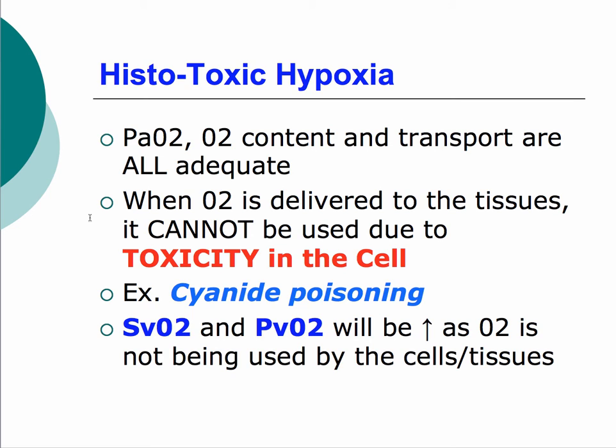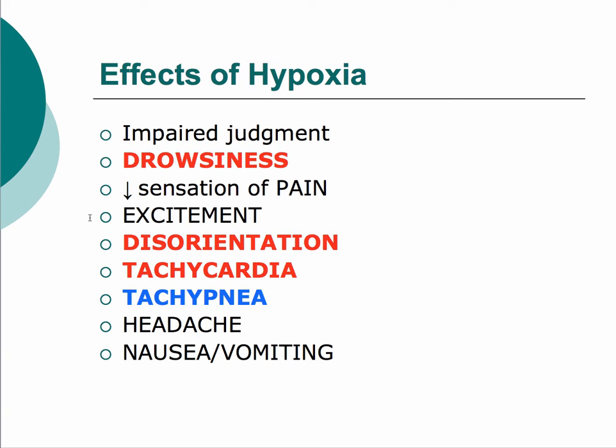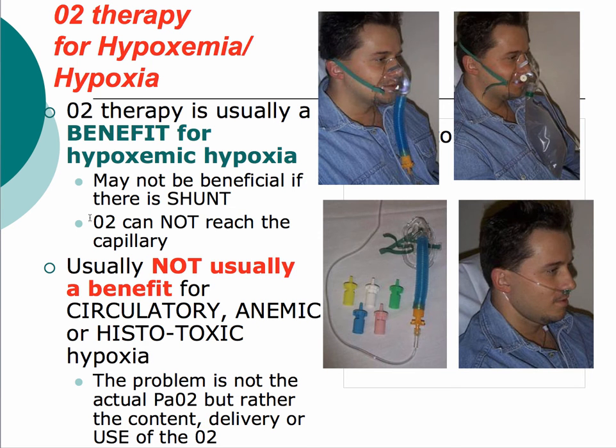Histotoxic hypoxia is the classic example of cyanide poisoning. Everything else is normal — pulmonary perfusion, ventilation, cardiac output — but the cells themselves are not able to utilize the oxygen being delivered. With cyanide poisoning, there's a mechanism in the electron transport chain that stops cells actually using oxygen, so tissues are almost resistant to it. All four types of hypoxia ultimately lead to tissue oxygen starvation, with symptoms including drowsiness, disorientation, tachycardia, tachypnea, decreased level of consciousness, and impaired judgment.